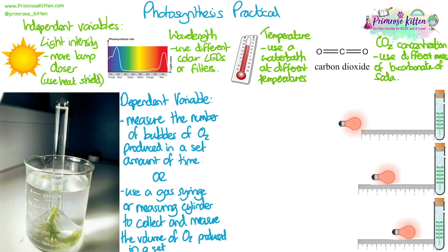You could also use a gas syringe or a measuring cylinder to collect and measure the volume of oxygen produced in a set amount of time.